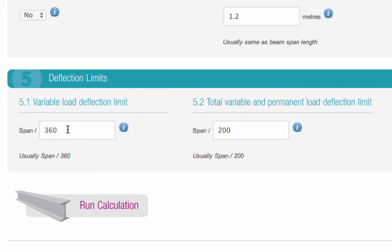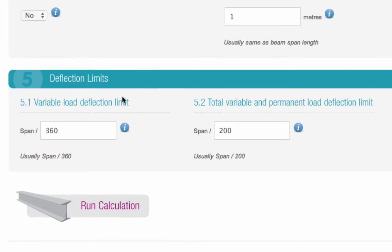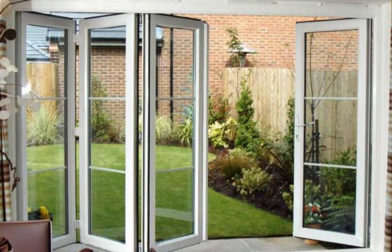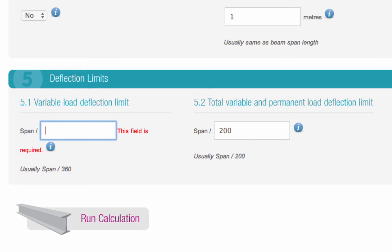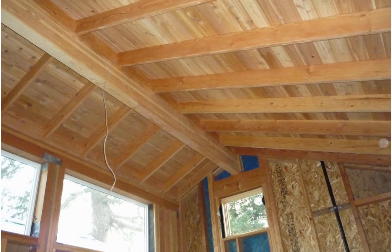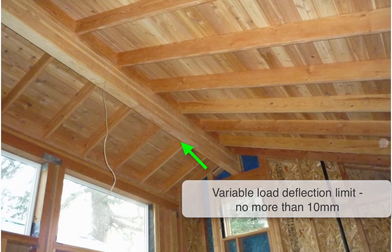Our calculator defaults to the recommended limits, but you may need to change these. For example, if you are using the beam to span above bifold doors, you may need to set a variable load deflection limit that's lower than the default. Or if the beam is going to be used as a structural ridge beam, the variable load deflection should not normally exceed 10mm.